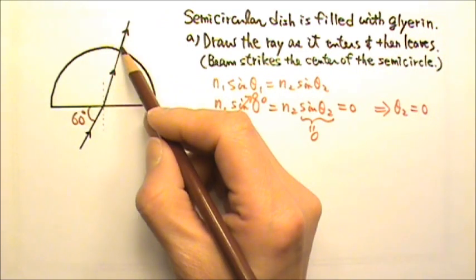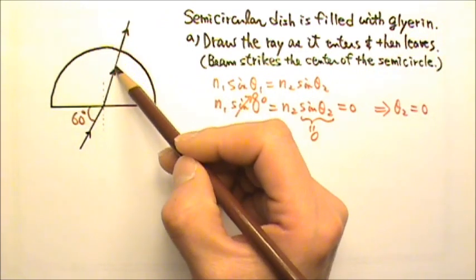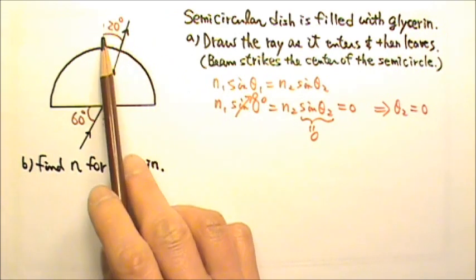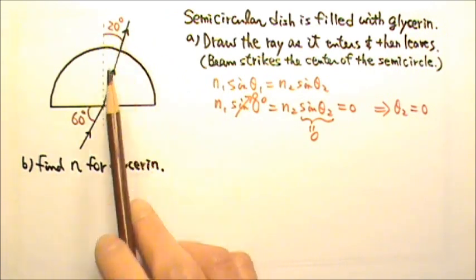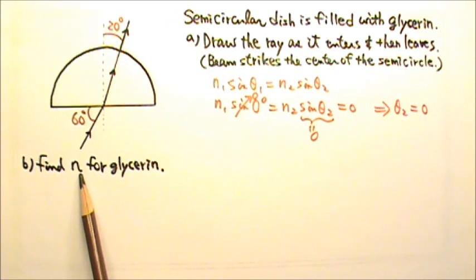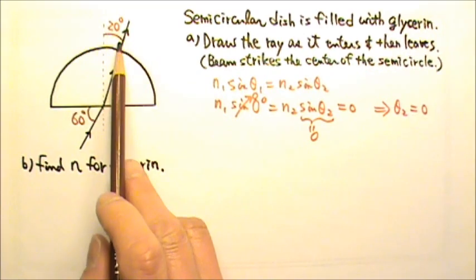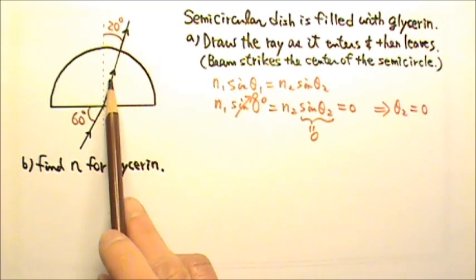So when we have normal incidence, the refracted ray would go straight through. For part B, if this angle is 20 degrees, find the index of refraction of glycerin. This is 20 degrees, so this is also 20 degrees.